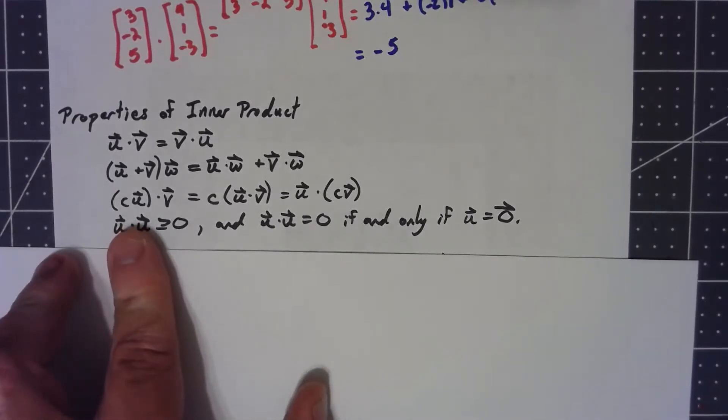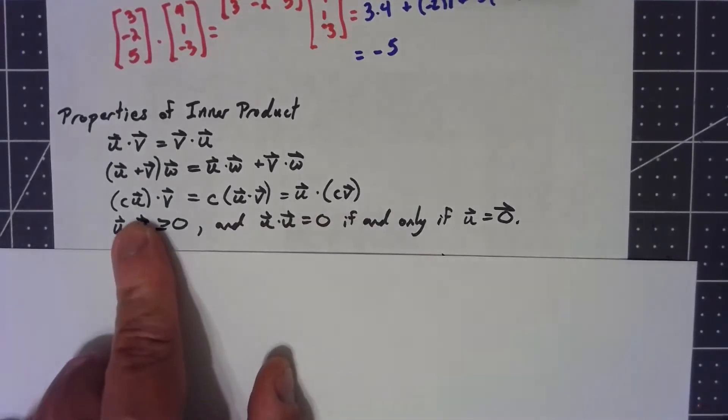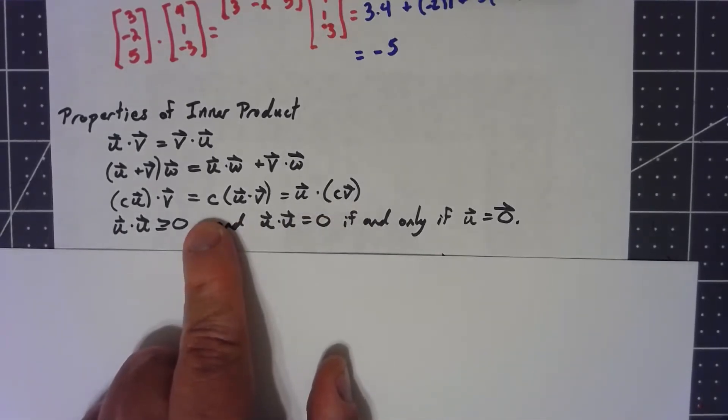If we're multiplying by a scalar, it kind of doesn't matter where in the process we multiply it. We can multiply the first vector times that constant, we can multiply the second vector times that constant, or just take the dot product and multiply the product times the constant.